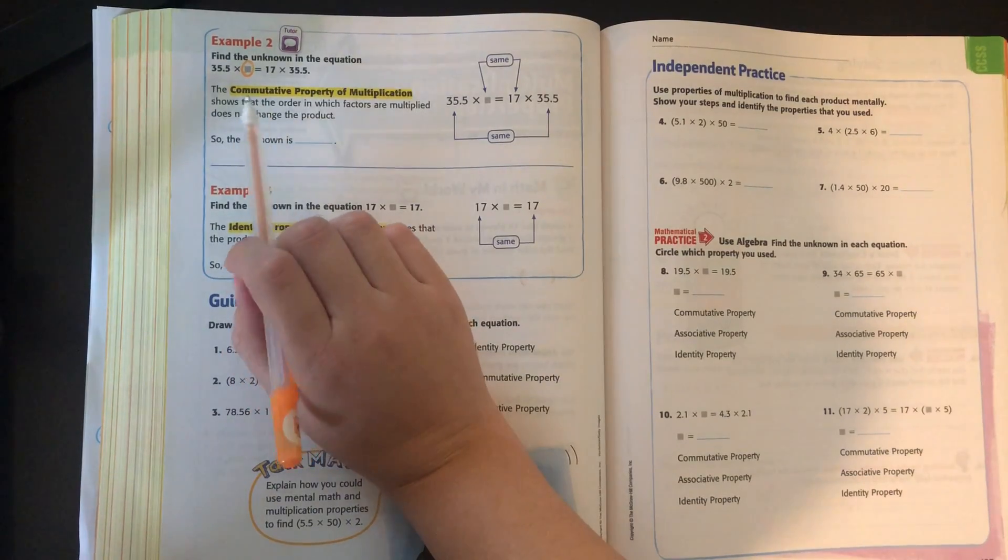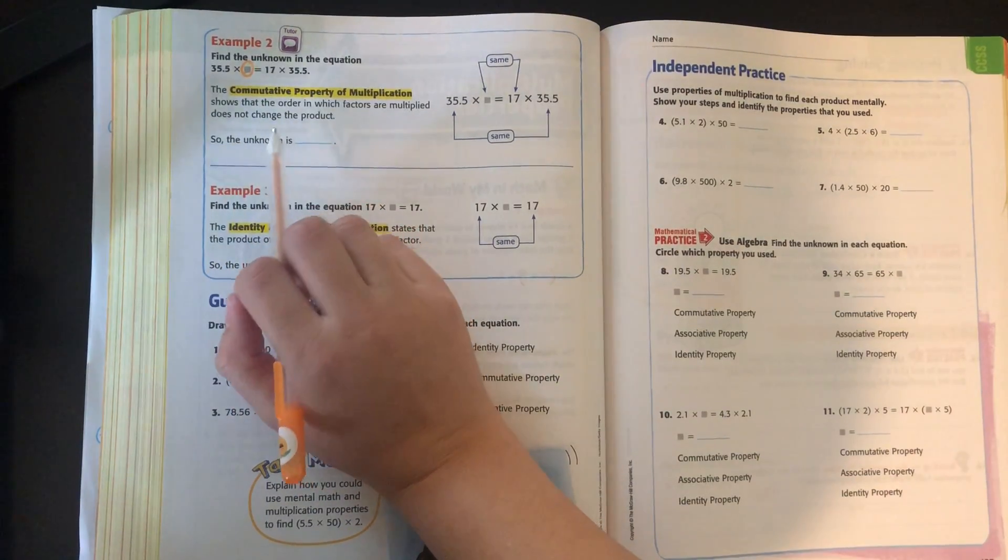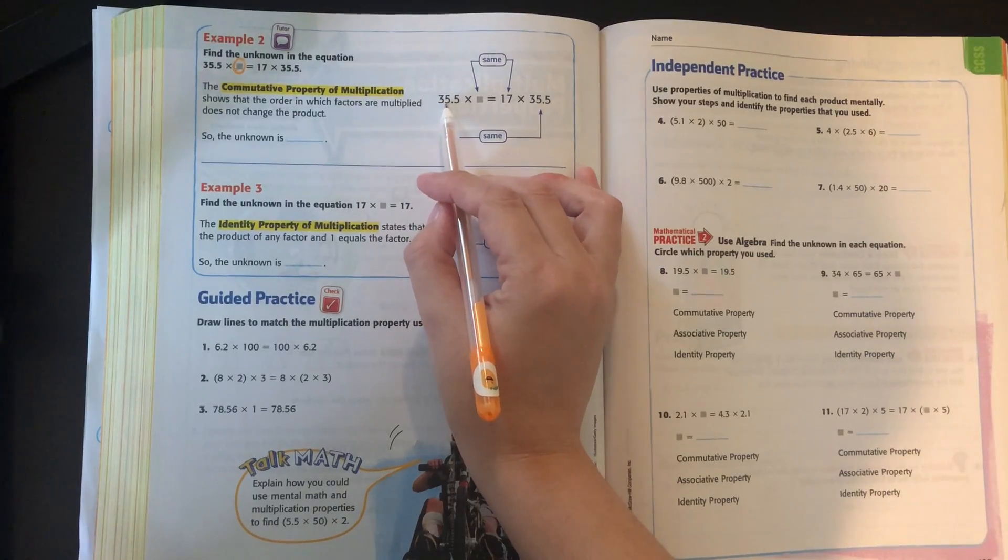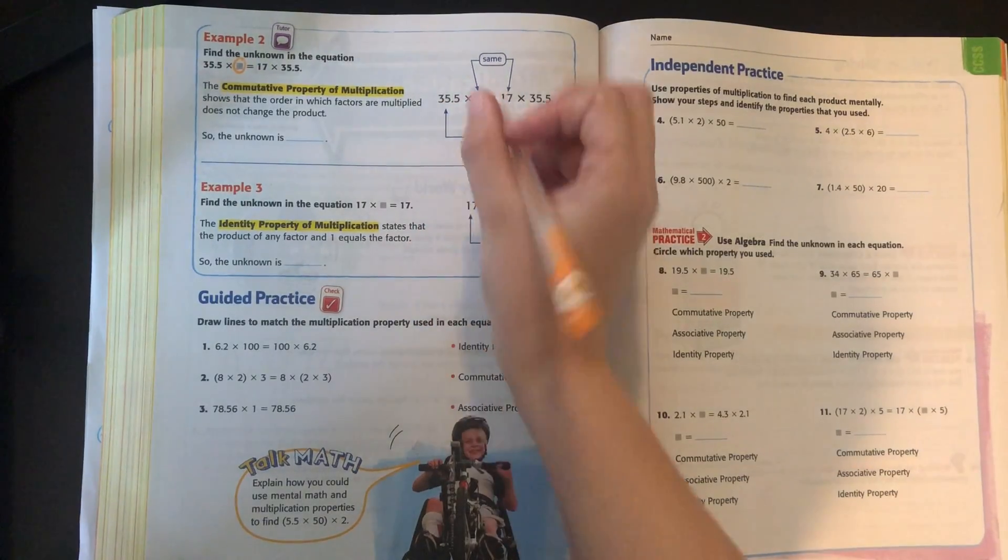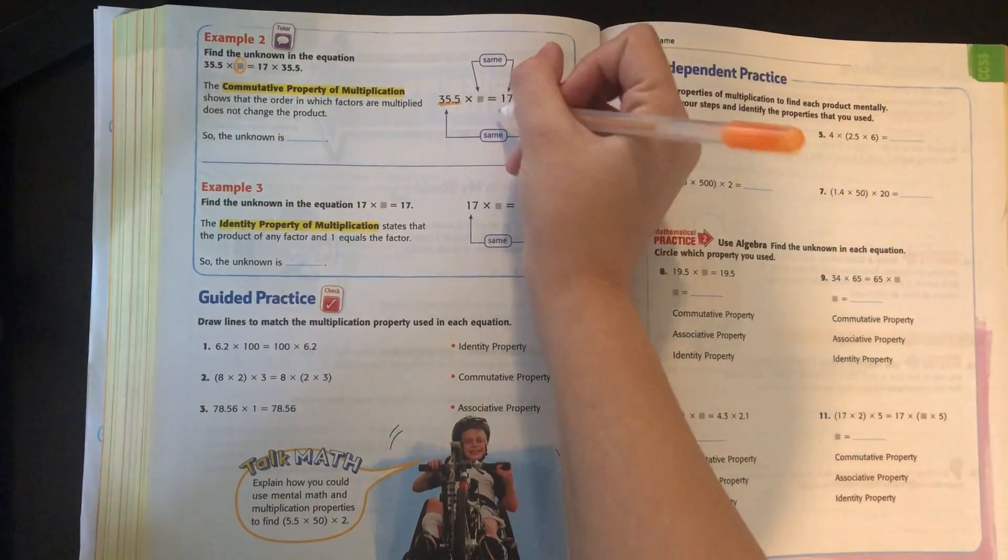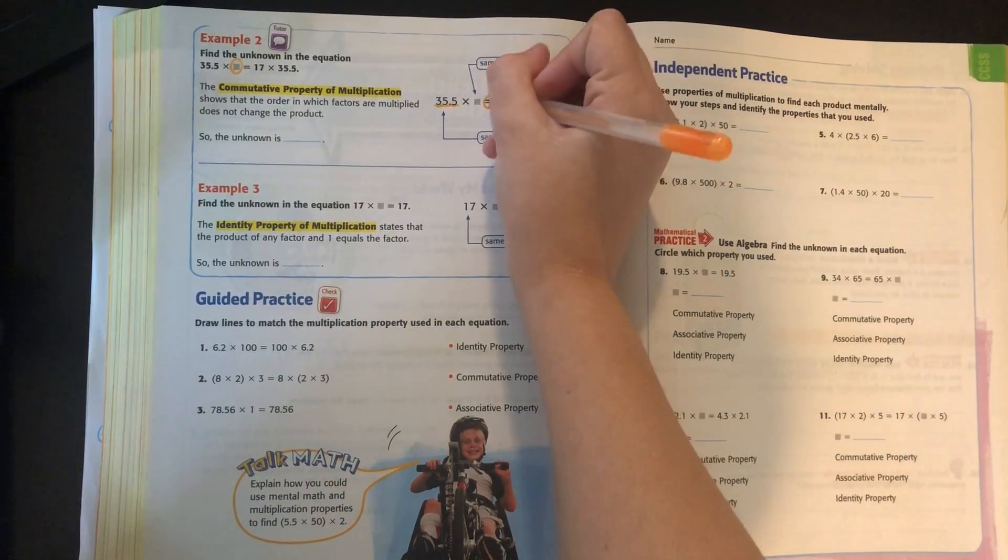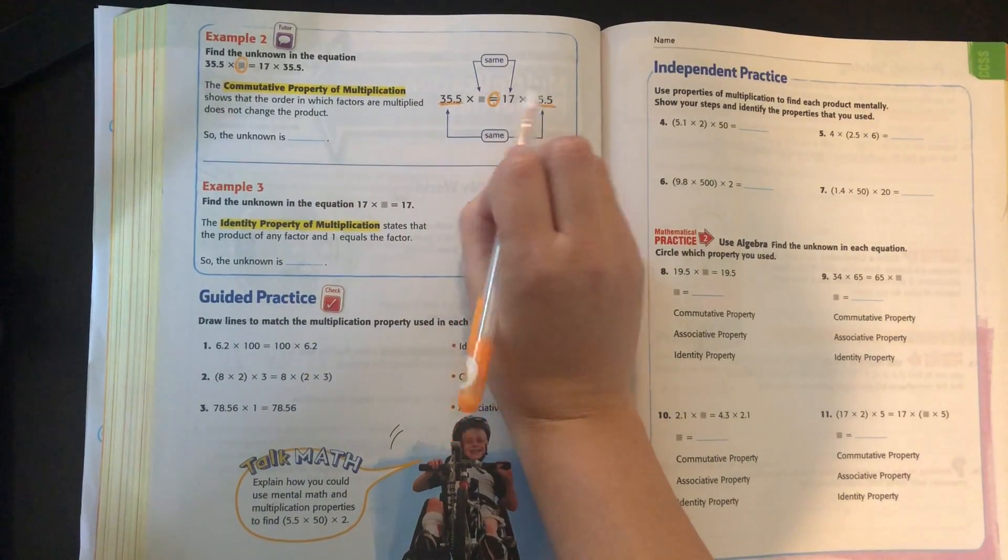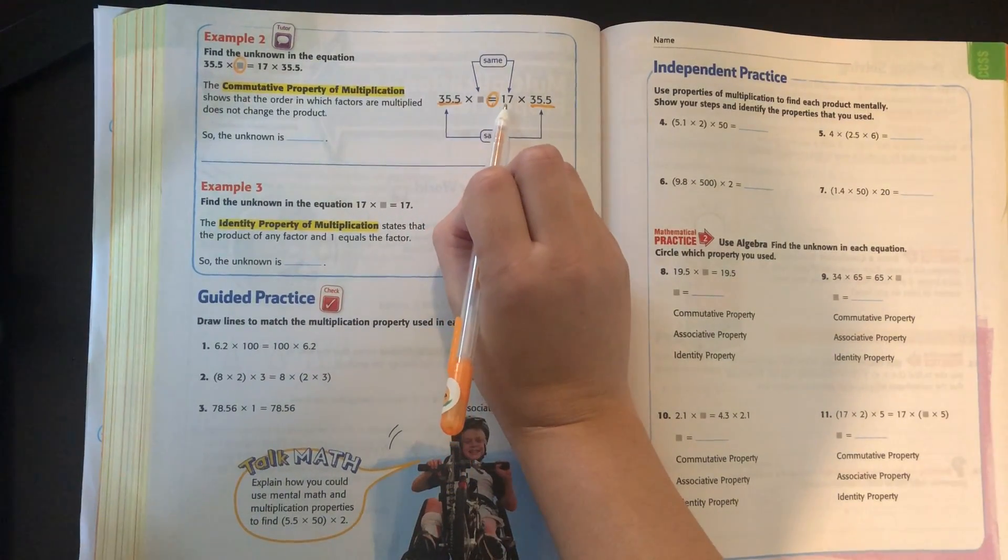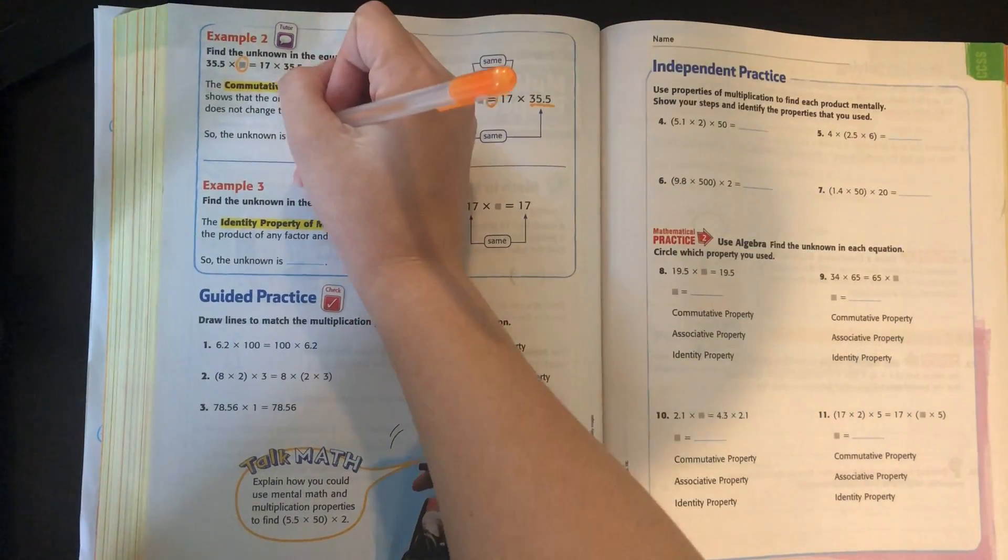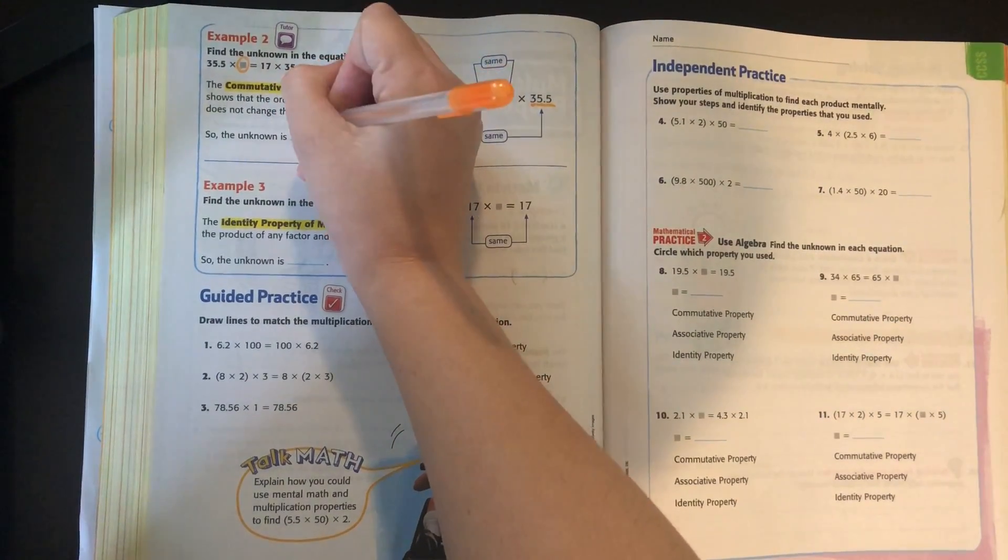So that means that the order that the factors are multiplied in does not change the product. So if we look at this problem, 35 and 5 tenths is the same on both sides. And we know that they're equal. So we know that whatever this side is has to multiply to the same as this side. So that means that 17 is going to be the same on the other side. So our unknown number is going to be 17.